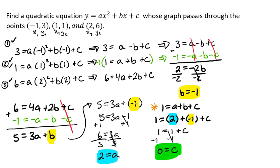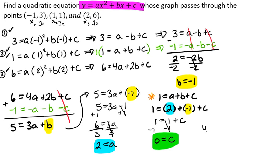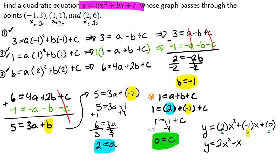Now we have our a, our b, and our c, so we go ahead and write our quadratic equation. Starting with y equals a x squared plus b x plus c, we plug in our values — a equals two, b equals negative one, and c equals zero — giving us y equals two x squared minus x. This is the quadratic equation that passes through the points negative one comma three, one comma one, and two comma six.